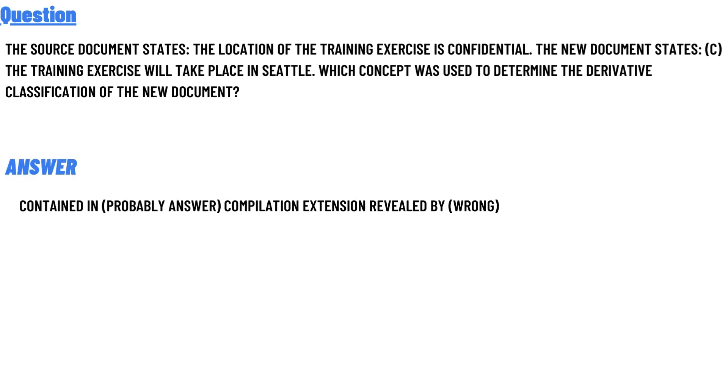The correct answer of the question is contained in probably answer. Compilation extension revealed by wrong. So that is the answer of the question.